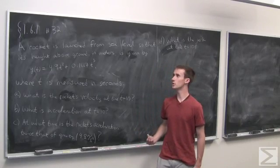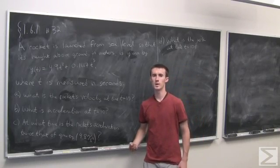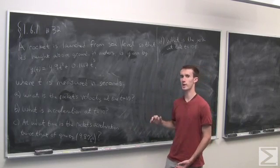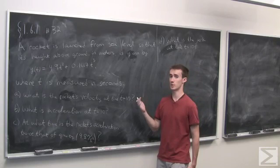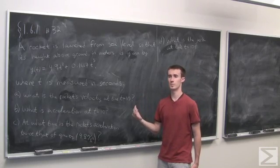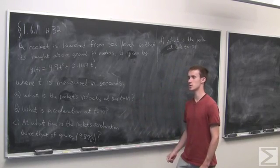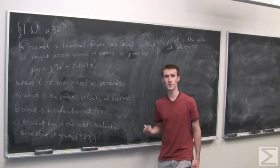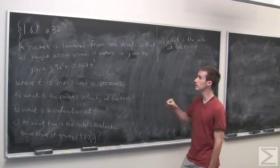Problem number 32 of section 1.6.1 gives us a function modeling the height of a rocket above its launch pad at sea level after t seconds after its launch. The first question asks: what is its velocity at time t equals 10?